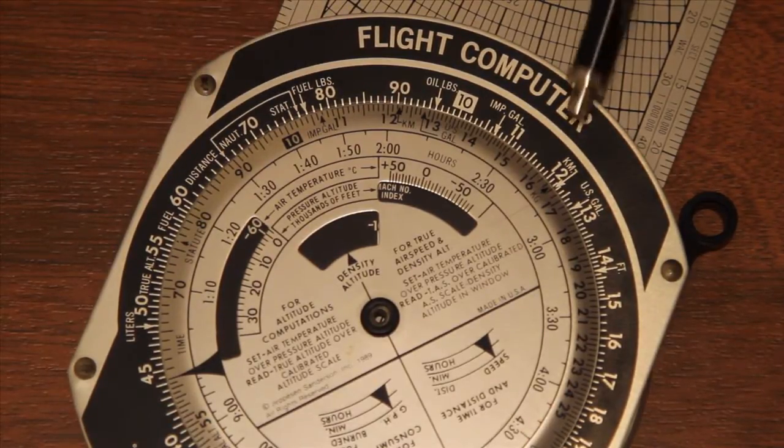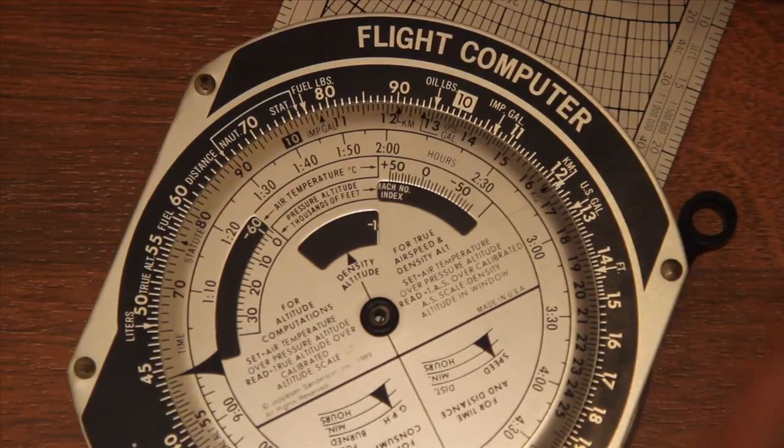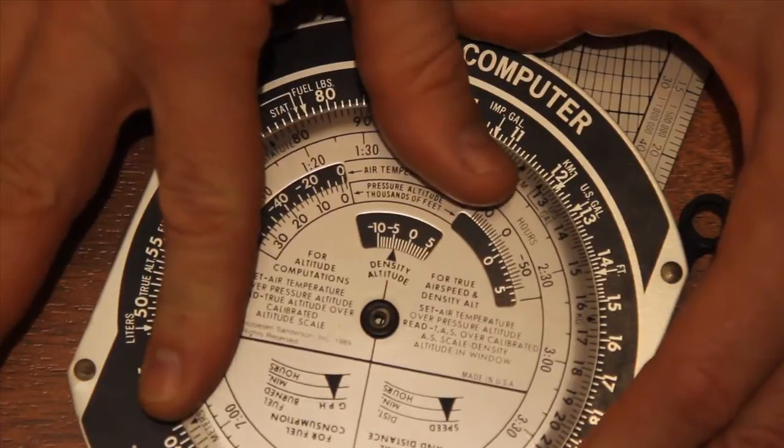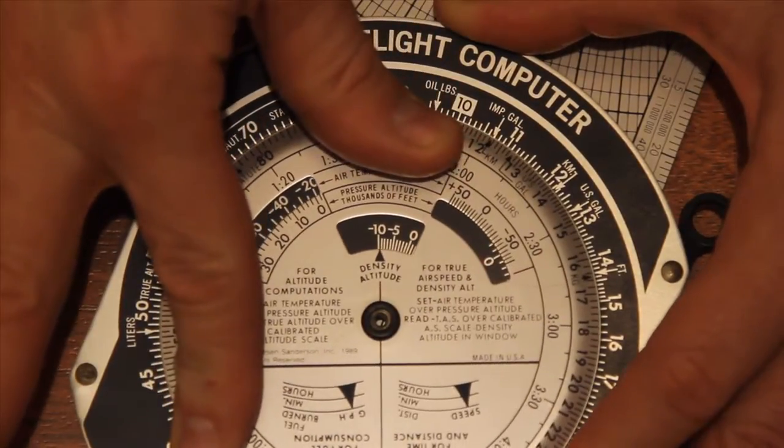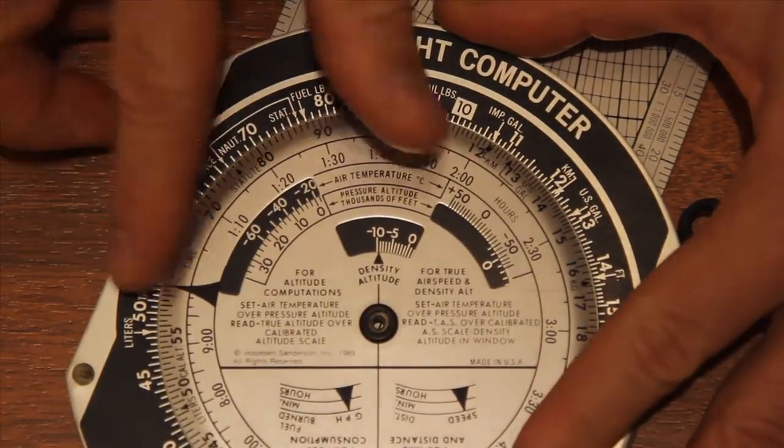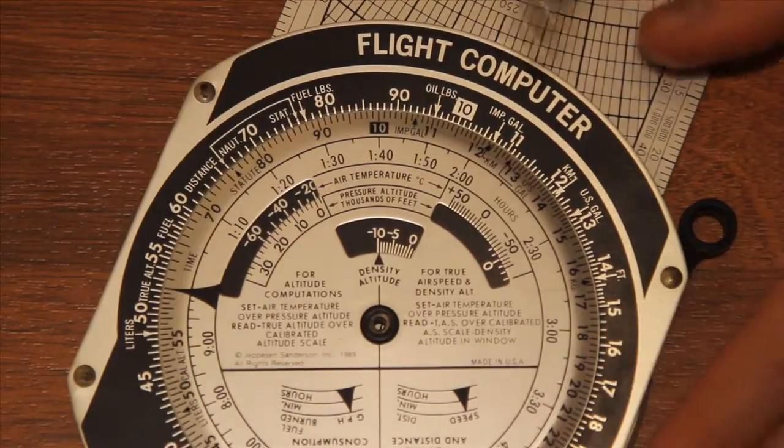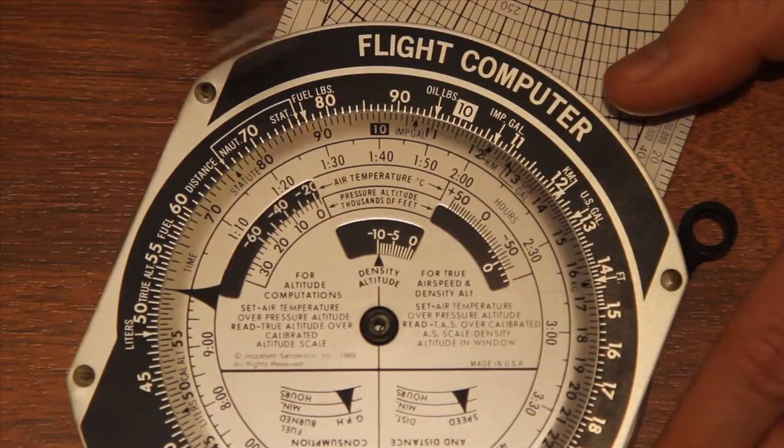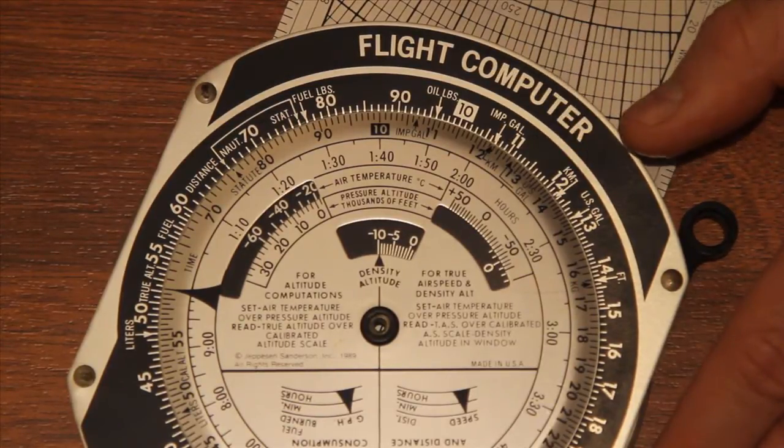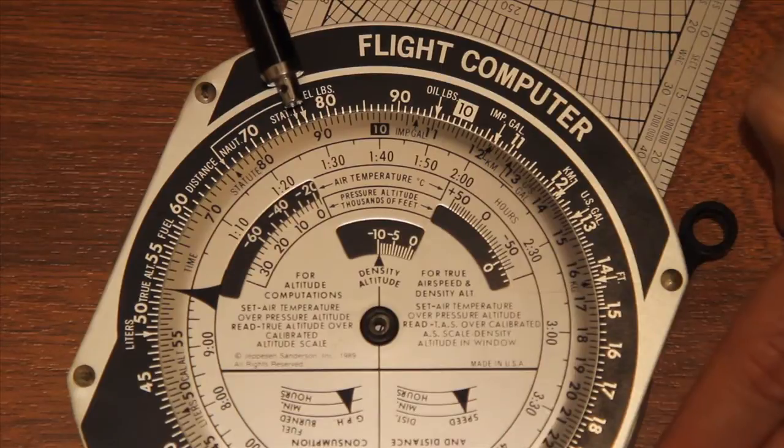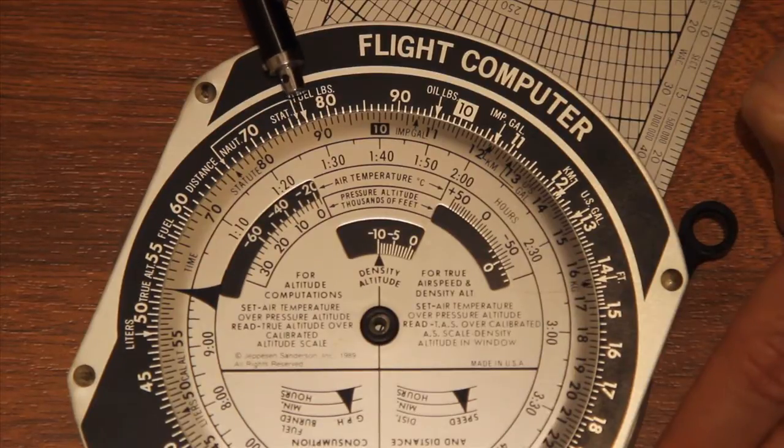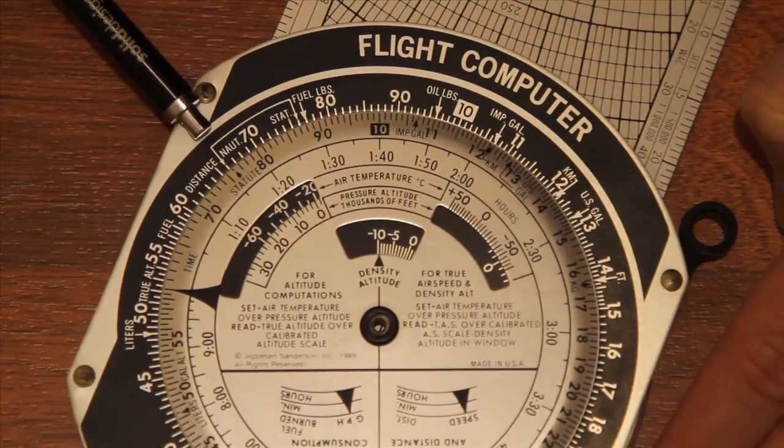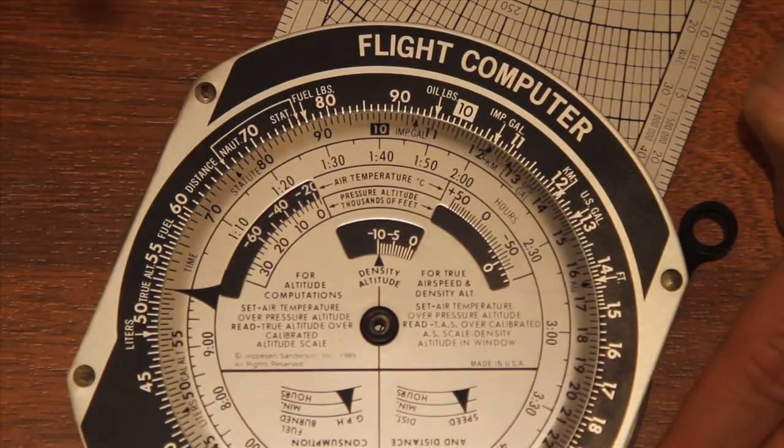So if you have, let's say 140 kilometres, you put 140 kilometres on the kilometre scale and then you can read that as statute and nautical. So 140 kilometres is 87 statute miles and about 76 nautical miles, really easily.